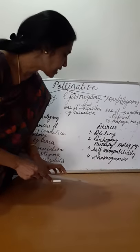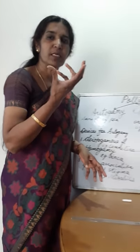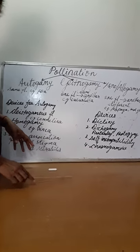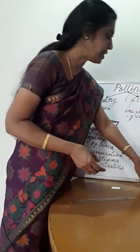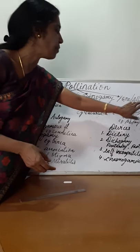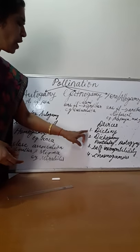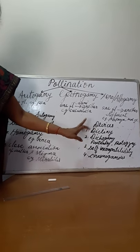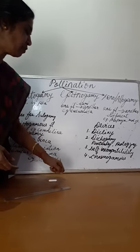The fourth one is chasmogamous flowers. Chasmogamous means open flowers. These are flowers which ensure cross pollination, with exposed stamens and stigma. They ensure xenogamy or allogamy. So the devices of xenogamy are: one, dicliny (unisexuality); two, dichogamy (anther and stigma mature at different times); three, self incompatibility or self sterility; four, chasmogamous flowers.